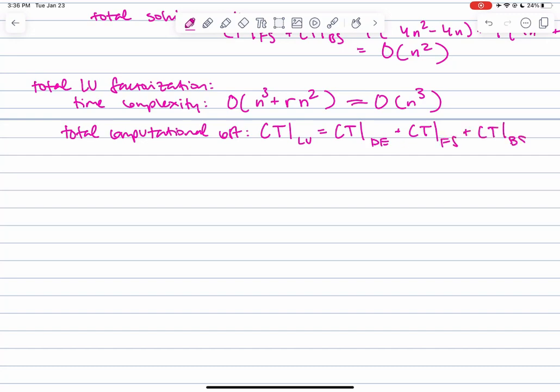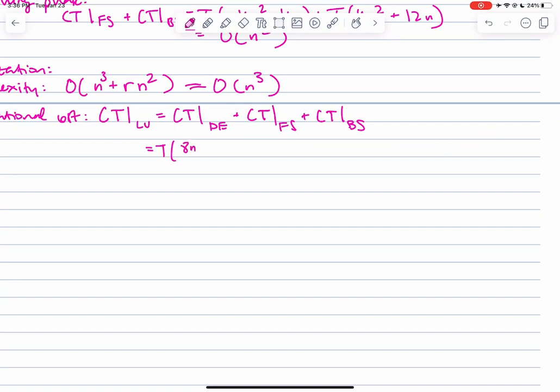If you have r number of different b's that you have to find during the solving phase, this makes the time complexity of LU factorization big O of n³ + r·n², which is about big O of n³, and this is the total computational cost of doing LU factorization.